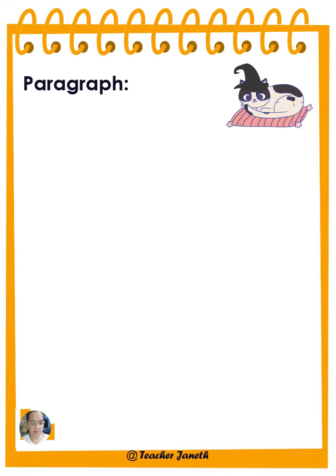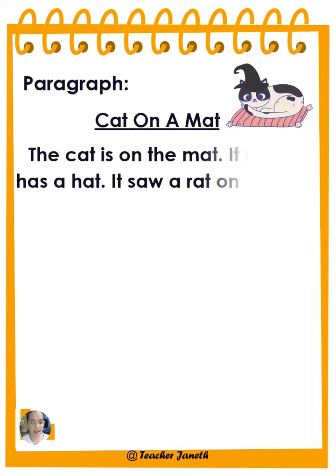Paragraph: Cat on a Mat. The cat is on the mat. It is fat. The cat has a hat. It saw a rat on the mat.